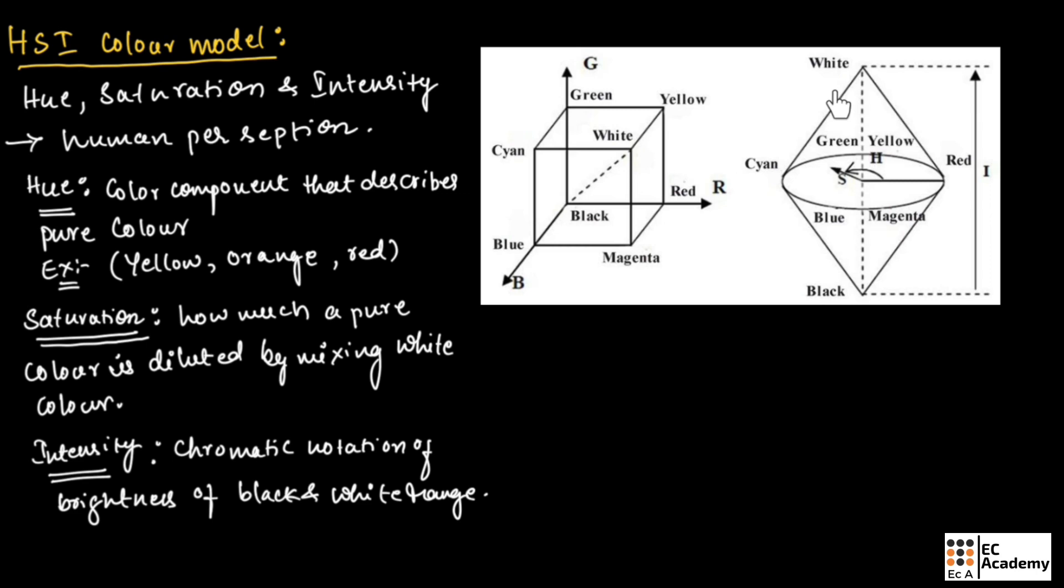This axis between black and white is known as intensity, represented as I in this diagram. Saturation at the intensity axis will be zero, and saturation increases as we move away from the intensity axis.